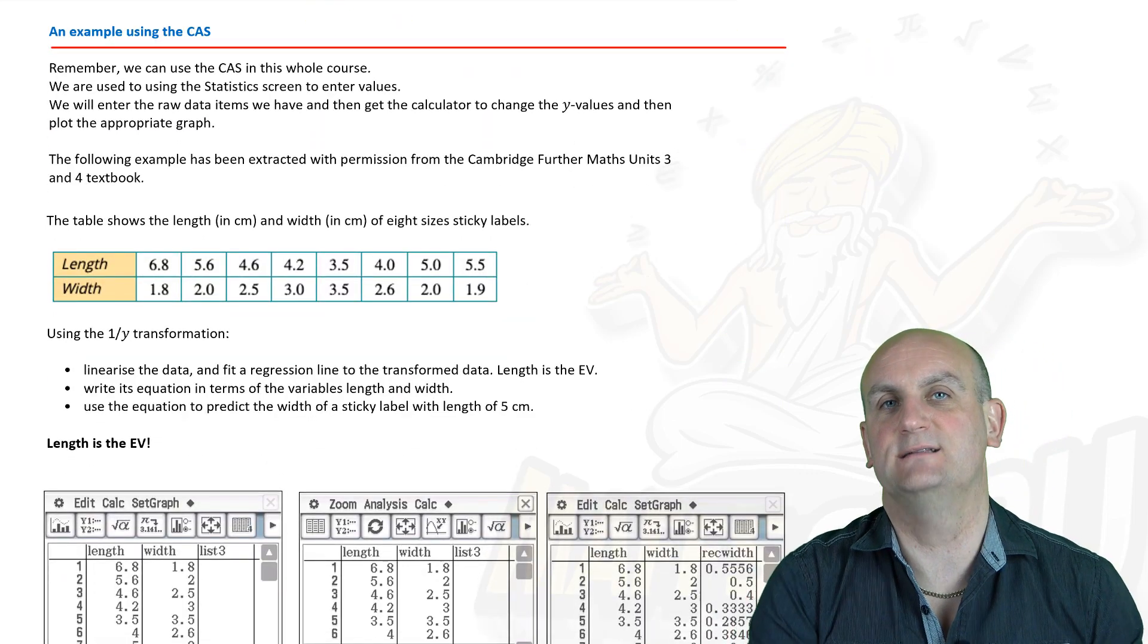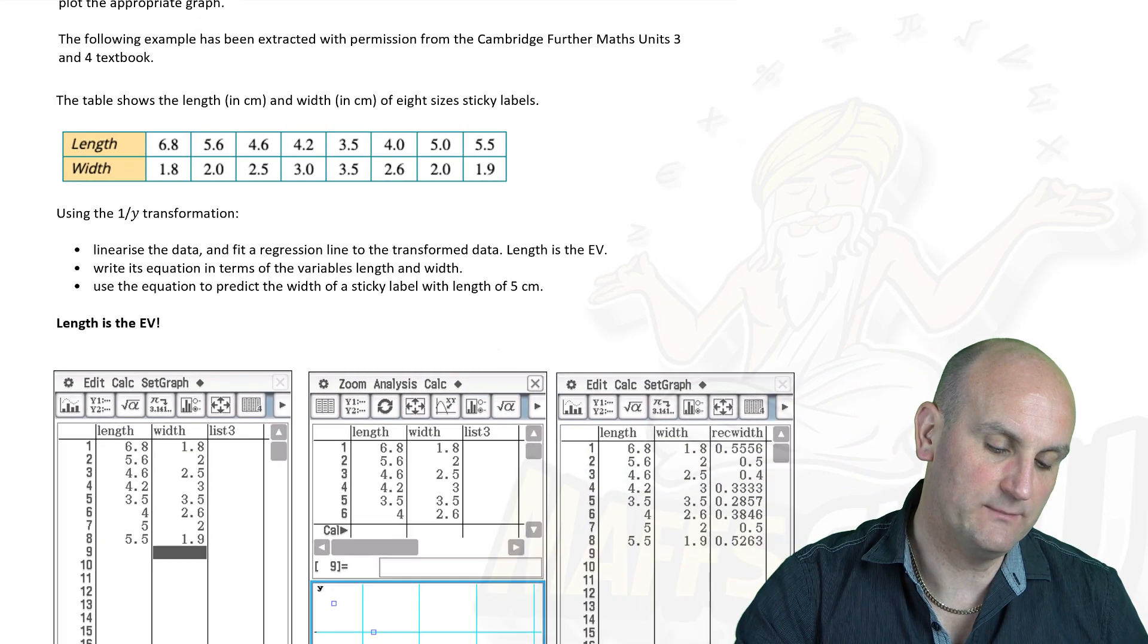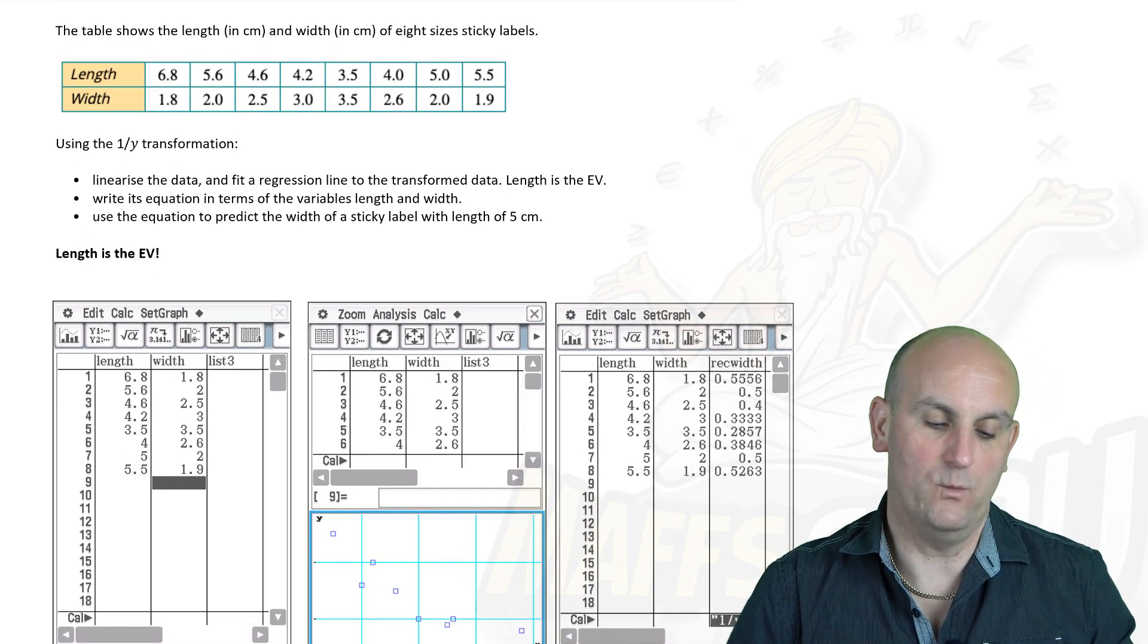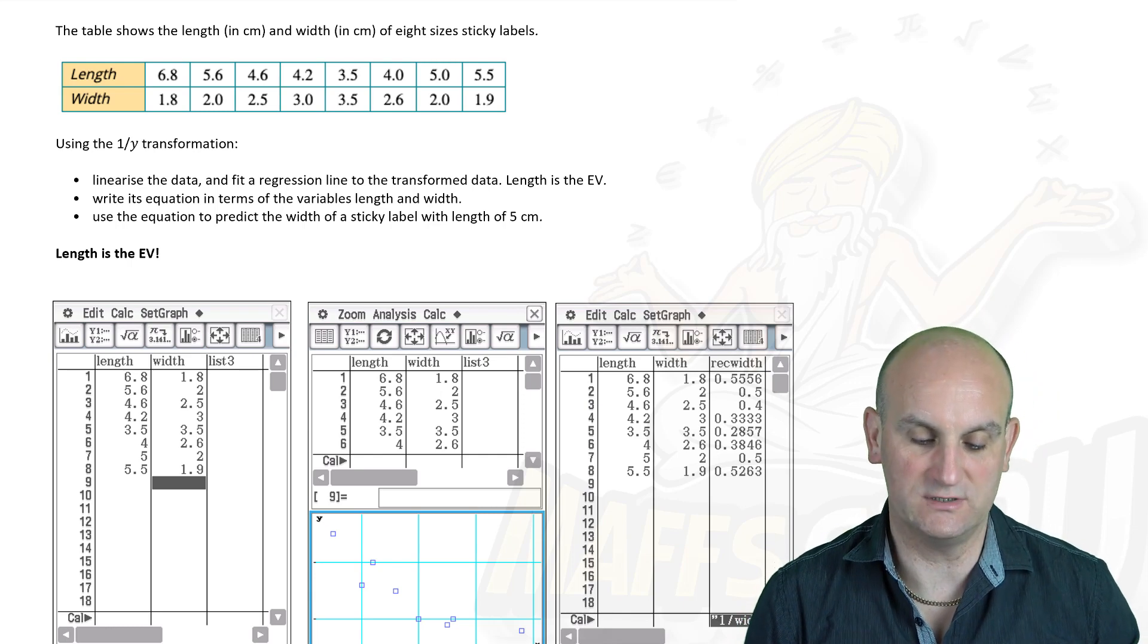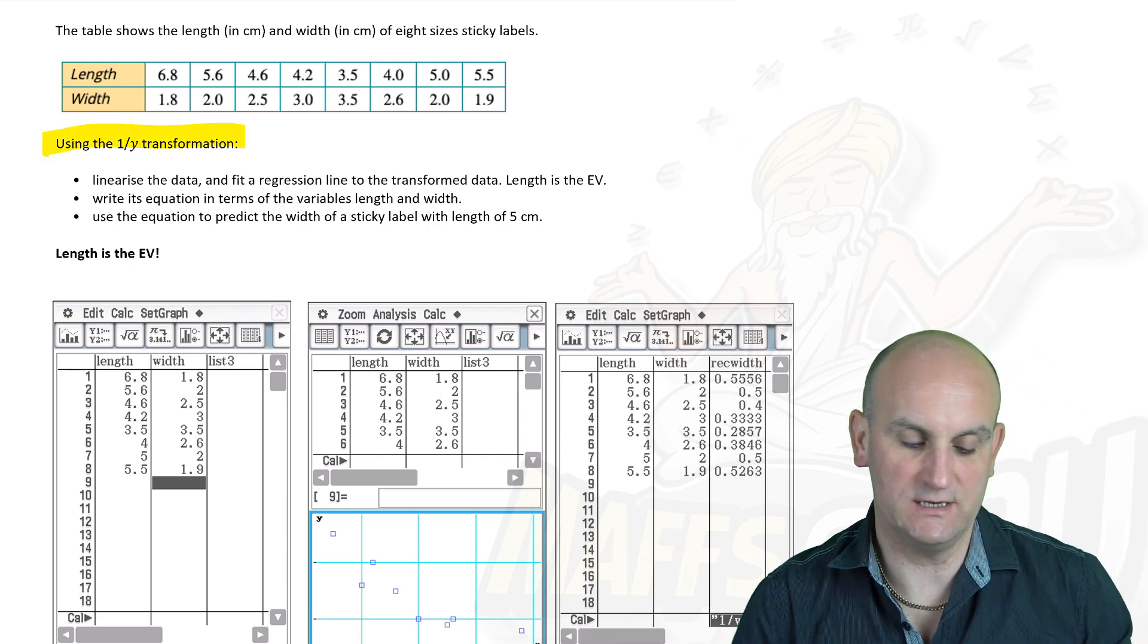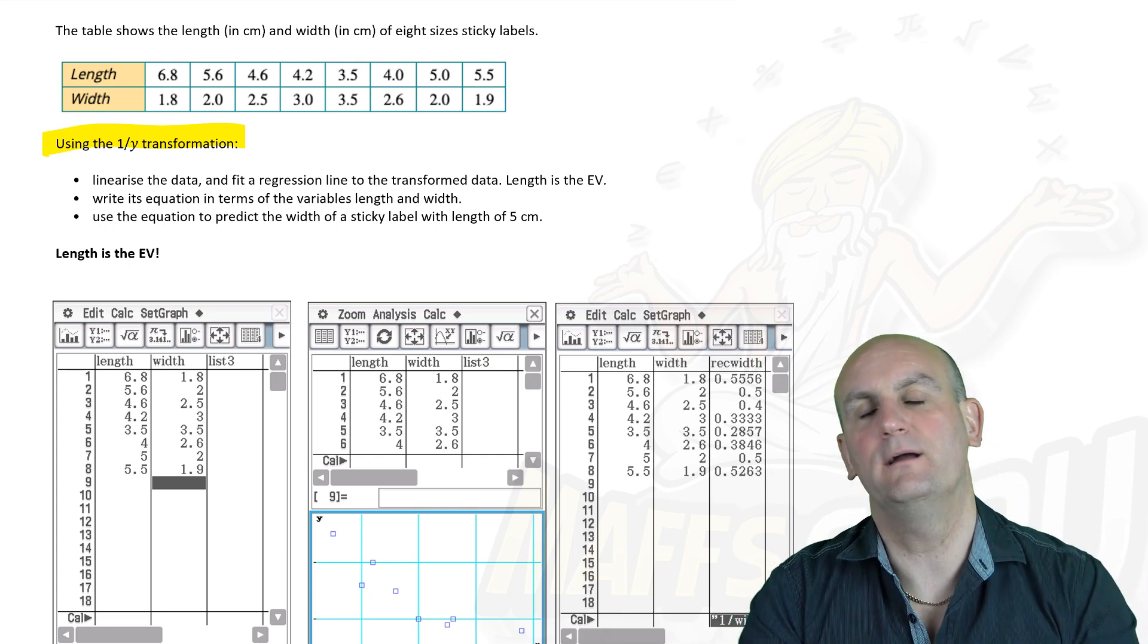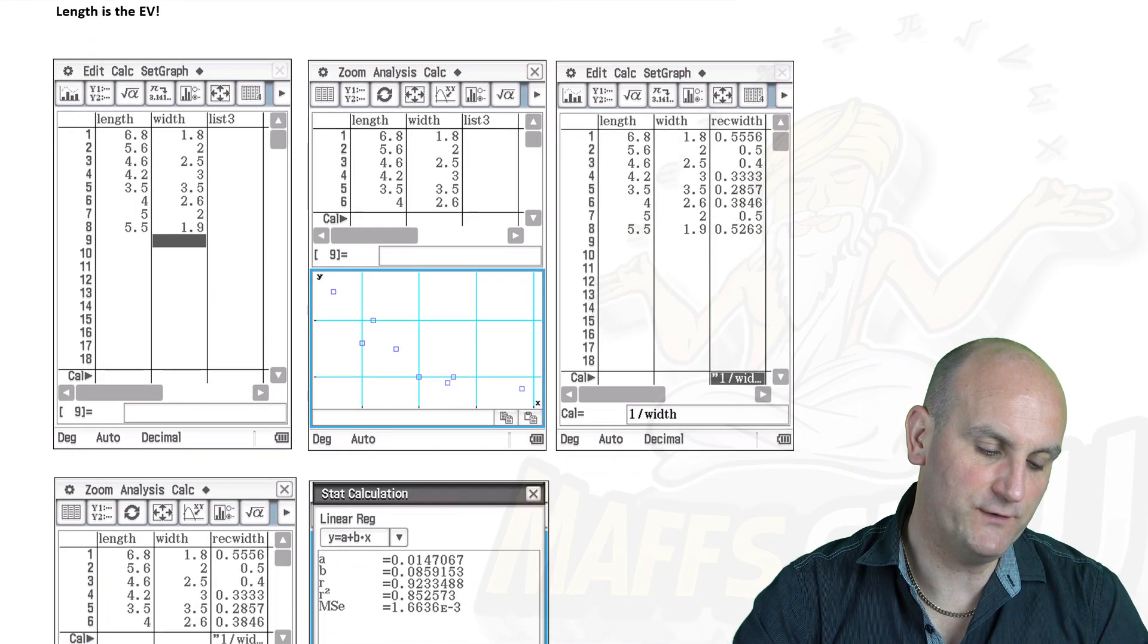So we're going to do an example using the CAS and then undoubtedly a VCAR question. We are going to take this example again from the Cambridge Further Maths Unit 3 and 4 textbook. It says the table shows the length in centimeters and width in centimeters of eight sticky size labels. It says to use a 1 on Y transformation to linearize the data, write its equation, and then to predict something. Remember, this whole linear regression stuff is about predicting.